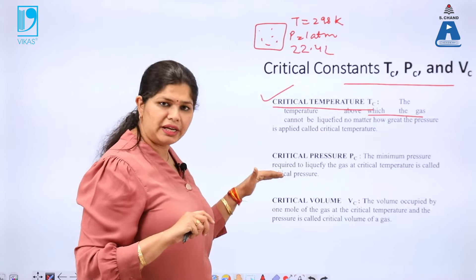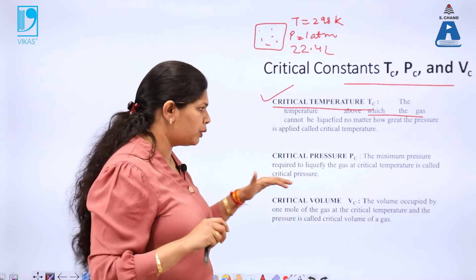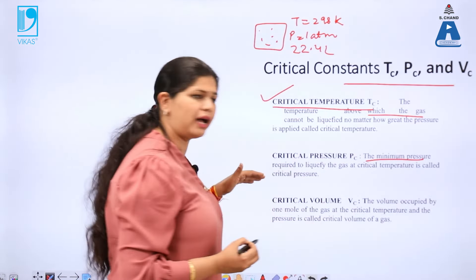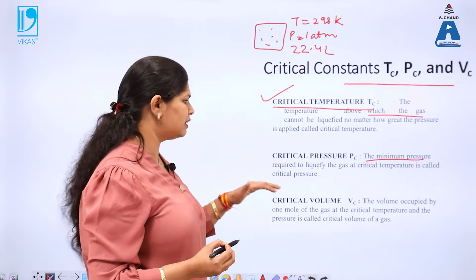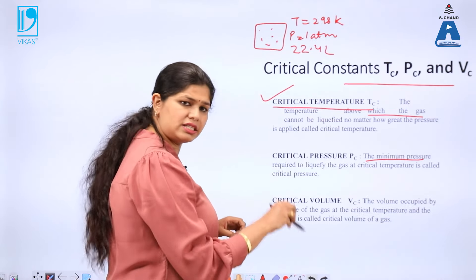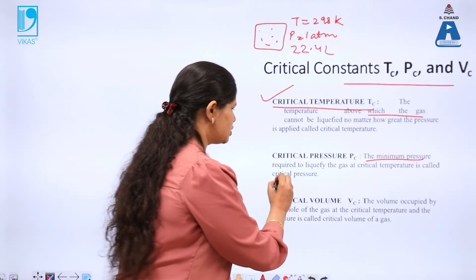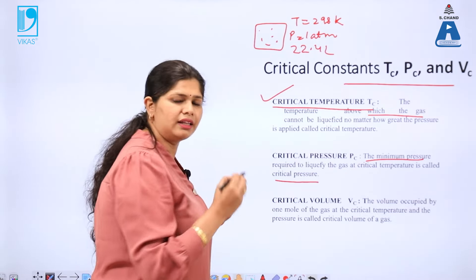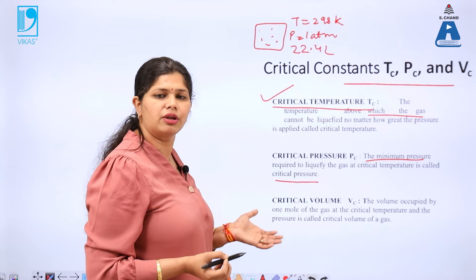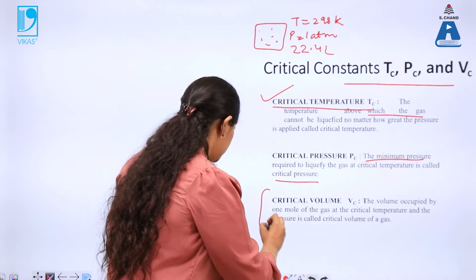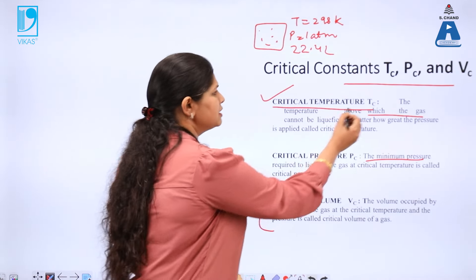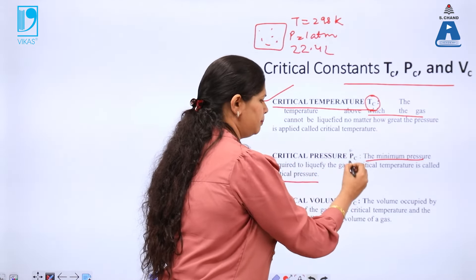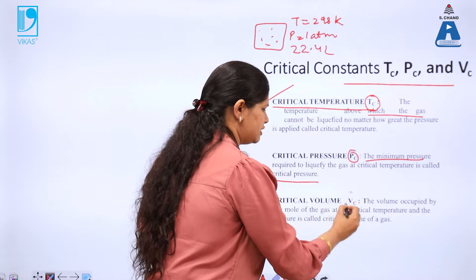The minimum pressure required to liquefy the gas at critical temperature is critical pressure, and the volume occupied by the system is the critical volume. These are represented as Tc, Pc, and Vc.